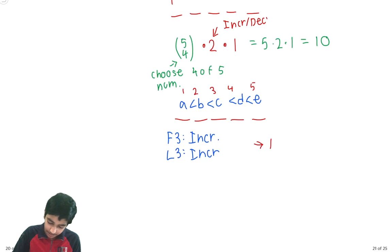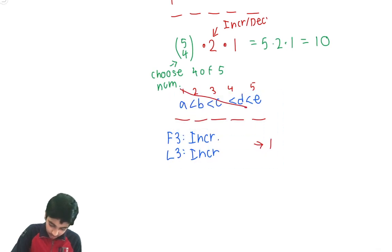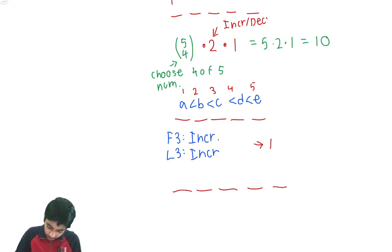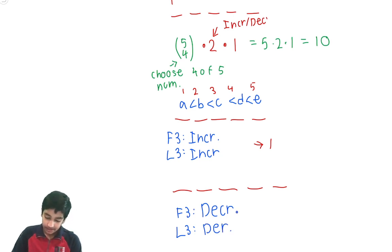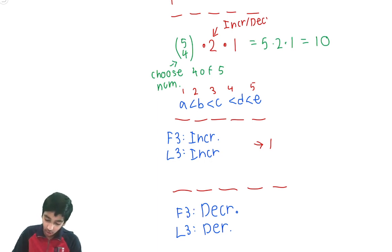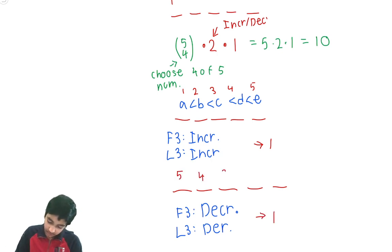Similarly, if the first three are decreasing and the last three are also decreasing, all five numbers must be decreasing, giving the sequence 5, 4, 3, 2, 1. So there's 1 case here as well.